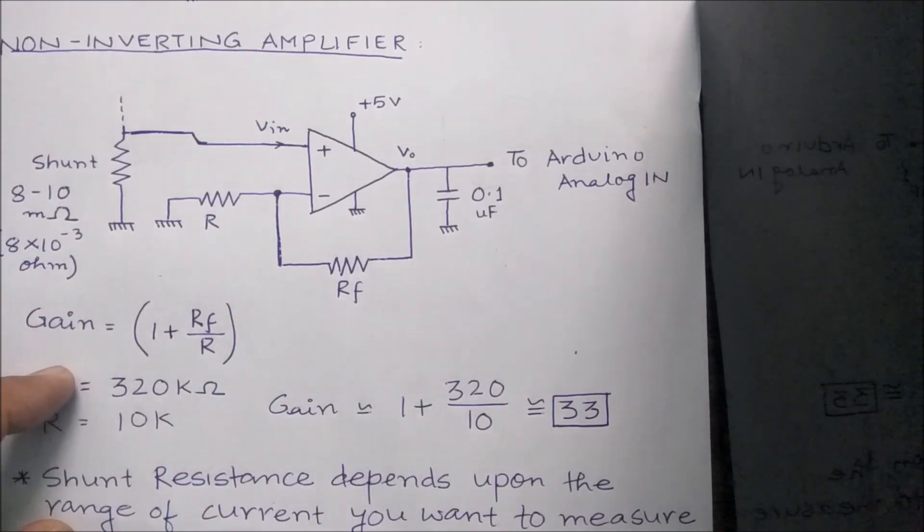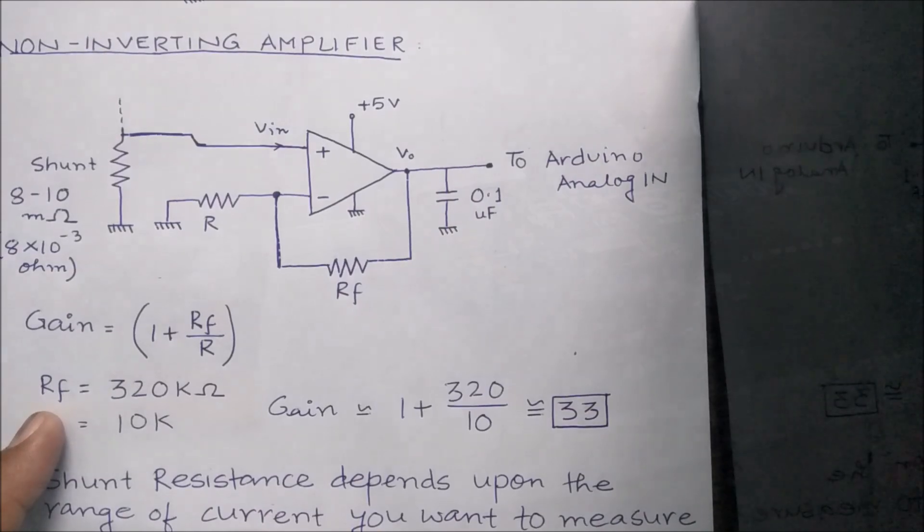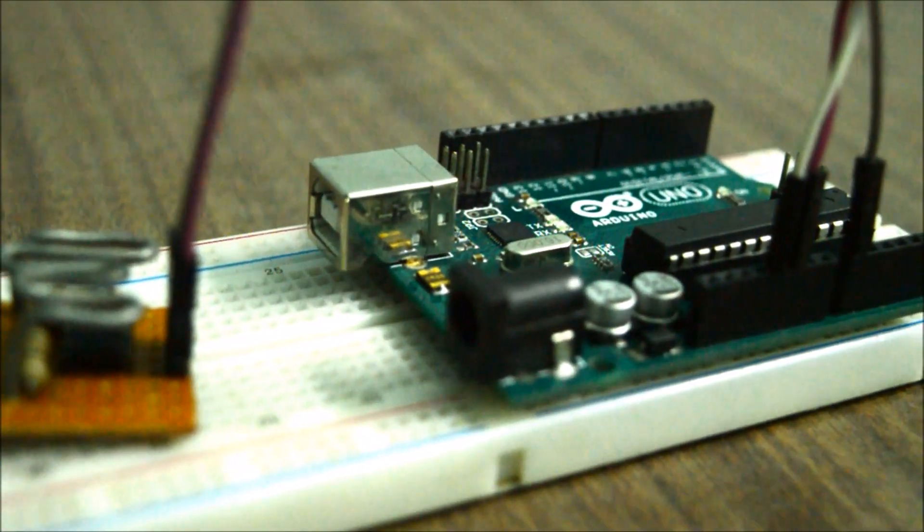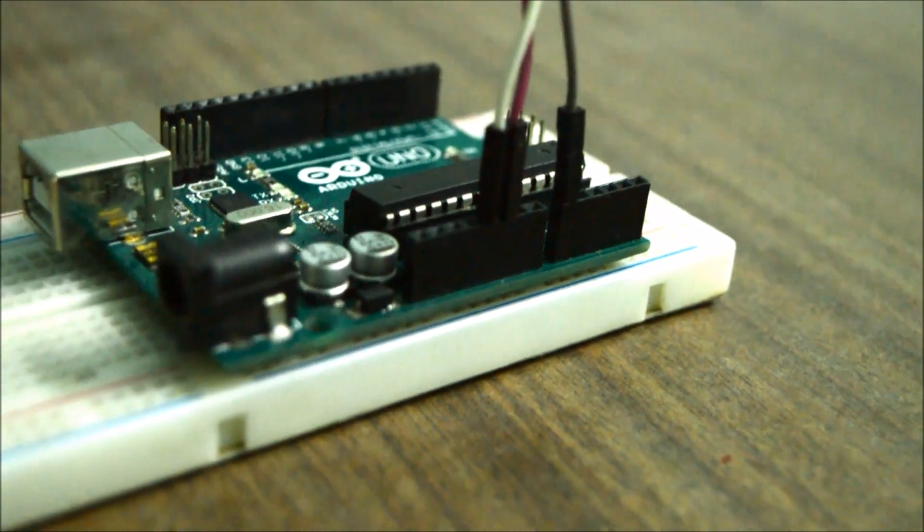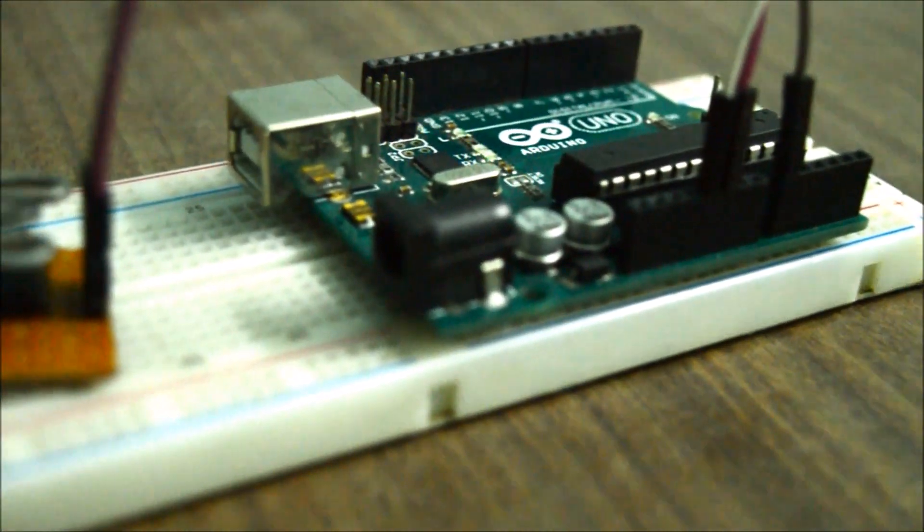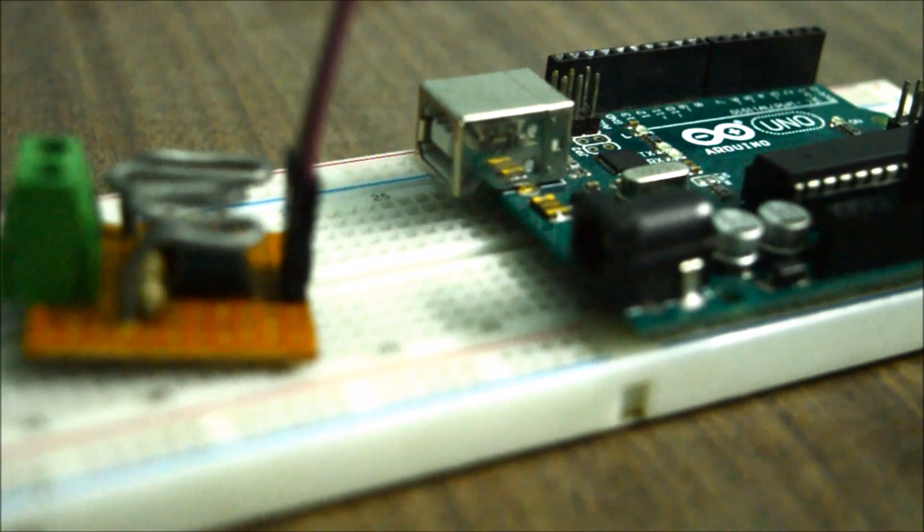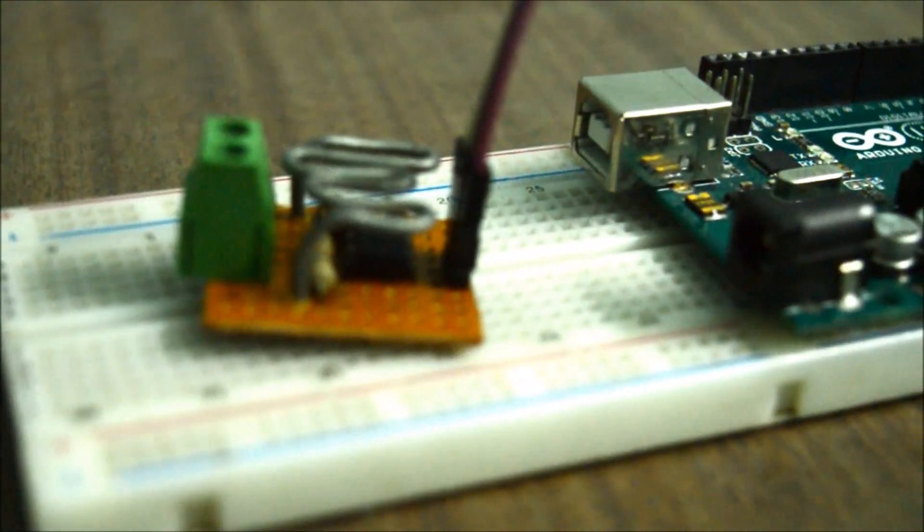In my practical circuit, what I found out was if I was passing a current of around 7 to 8 amps from the shunt, I was getting an output voltage in the order of around 2.5 to 3 volts, which is of course in the range of the 5 volts and the operational amplifier shouldn't have any problem amplifying in that range.